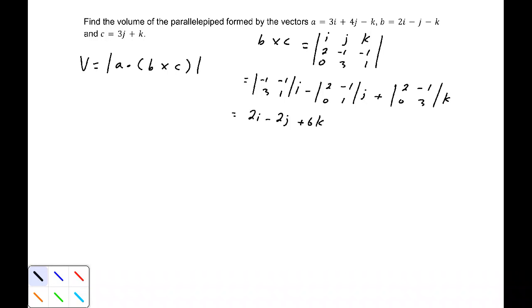Now next we need to find a dotted with b cross c. So just label this as our first step as b cross c. Our second step is a dotted with b cross c, which is going to be the vector 3i + 4j - k dotted with 2i - 2j + 6k.